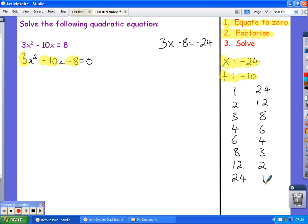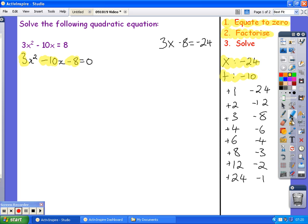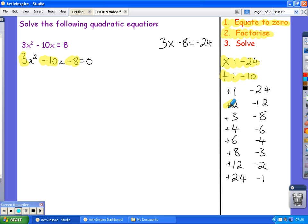Notice that each pair appears more than once. That's because the smaller number could be positive and the latter negative, or the other way around. Now, I'm looking for the pair which adds to give negative 10. Oh, that looks like this pair here. 2 and negative 12.